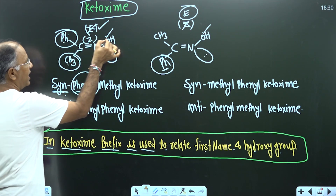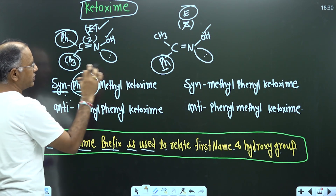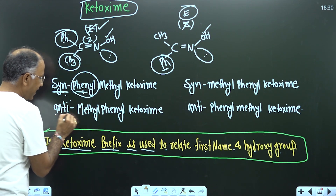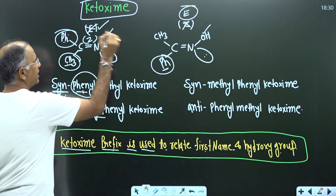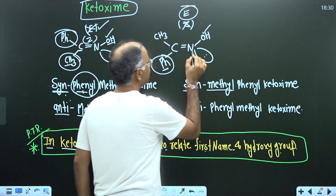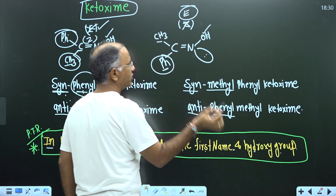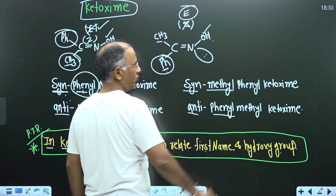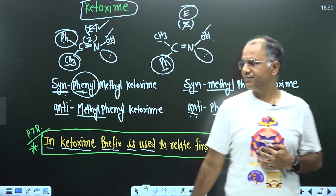In ketoxime, if you write syn, the prefix syn is used to relate the first name and the hydroxy group. For example, if the first name is phenyl and we write syn-phenyl, this means phenyl and the hydroxy group are syn to each other. Similarly, if we write anti-methyl, this means methyl and OH must be anti to each other. So syn-methyl means methyl and OH are on the same side; anti-phenyl means phenyl and the hydroxy group are anti. This gives us syn-phenyl methyl ketoxime or anti-phenyl methyl ketoxime.